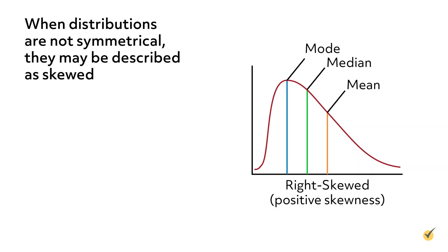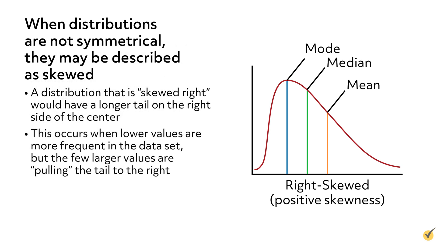When distributions are not symmetrical, they may be described as skewed. A distribution that is skewed right would have a longer tail on the right side of the center. This occurs when lower values are more frequent in the dataset, but the few larger values are pulling the tail to the right.